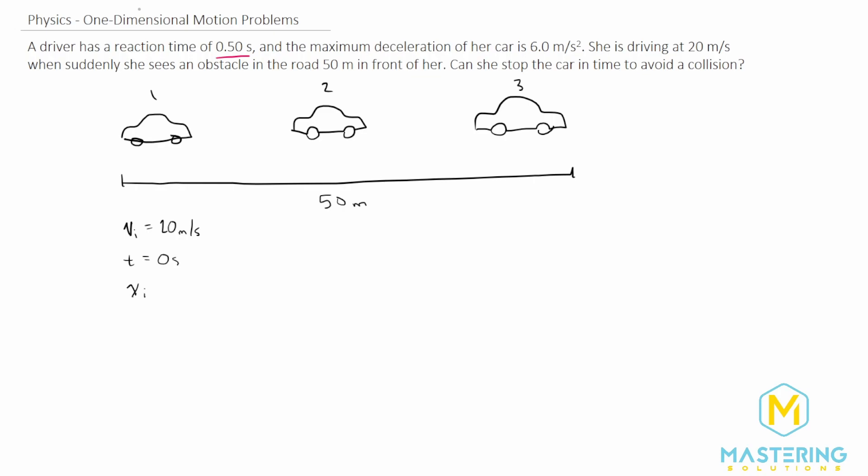And the x initial is 0 because that's just where we're starting to look at the problem. And the x final, we don't know. So we need to solve for that before we can move on to the next step.